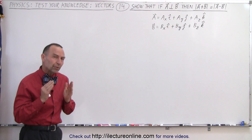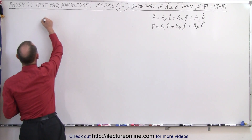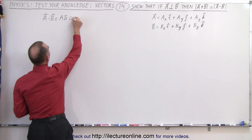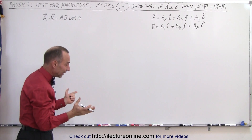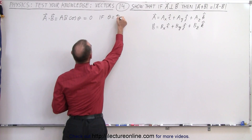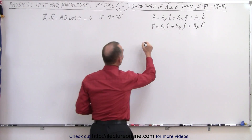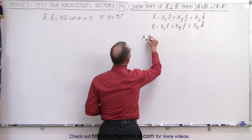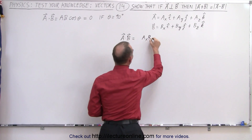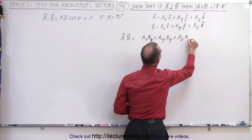Then we realize that if we take the dot product of two vectors and they are perpendicular, that dot product is equal to zero. In other words, A dot B equals the magnitude of A times the magnitude of B times the cosine of the angle between them. If they're perpendicular, cosine of 90 degrees equals zero. So this equals zero when theta equals 90 degrees. We can also write the dot product as A dot B equals A_X B_X plus A_Y B_Y plus A_Z B_Z, and that must also equal zero.